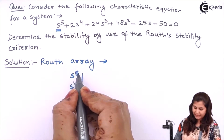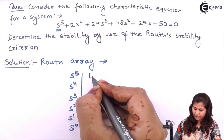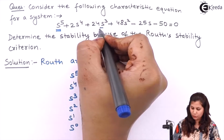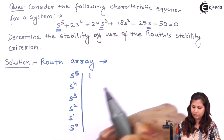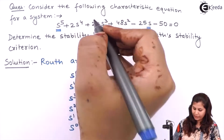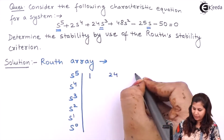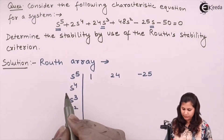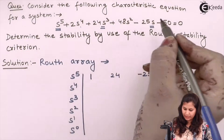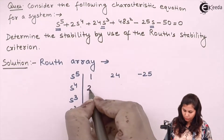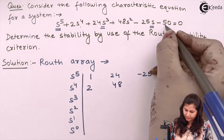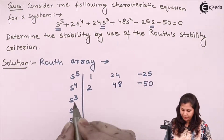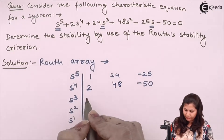The coefficient of S5 is 1. The coefficient of S3 is minus 25. Now the coefficients of the even terms — that is S4, S2, and S0 — are 2, 48, and minus 15 respectively.